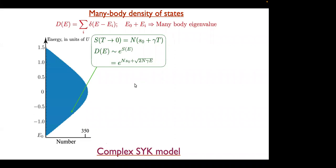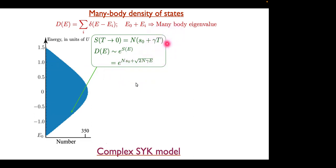We know that dF/dT equals minus S, and that F equals E minus T·S. From these three quantities you can convert S(T) to S(E). When you do that, you find that S(E) is the square root of 2N·gamma·E, which tells you why you have the square root in D(E). These are both exponentially large terms — it's just thermodynamics. The square root of E is simply the consequence of the linear temperature dependence of the entropy.